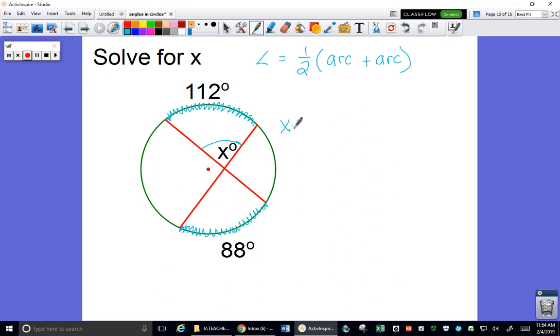These chords make this arc as one of the intercepted ones and that arc. So the angle x equals half of 112 arc plus 88. We add these two things together, 112 and 88, we get 200. One last thing is to multiply by one half, so x is going to be 100 degrees.